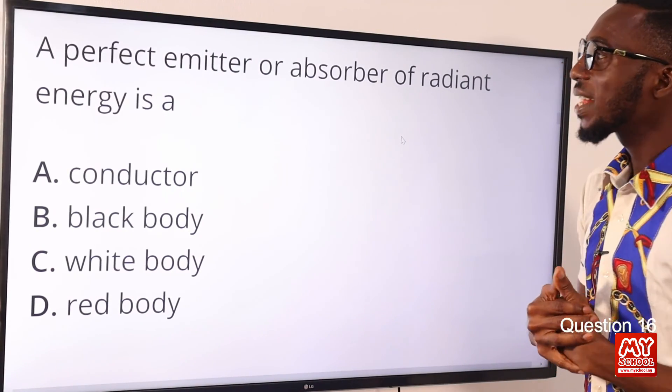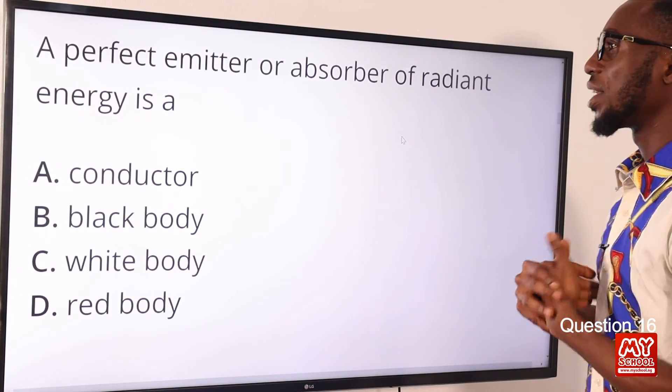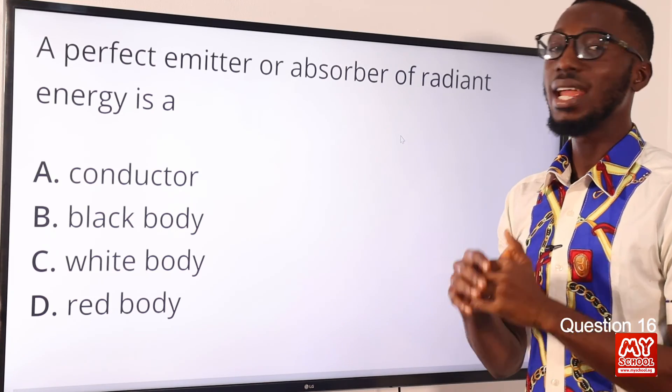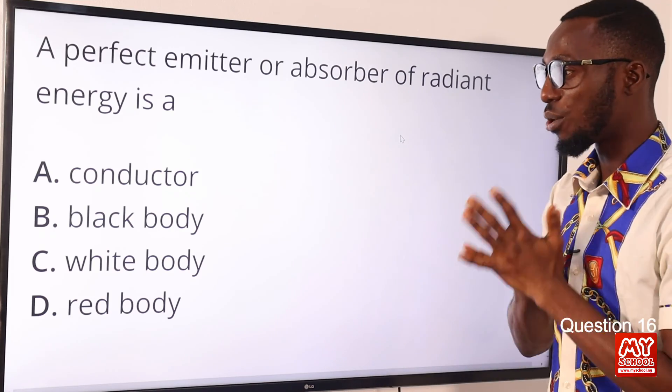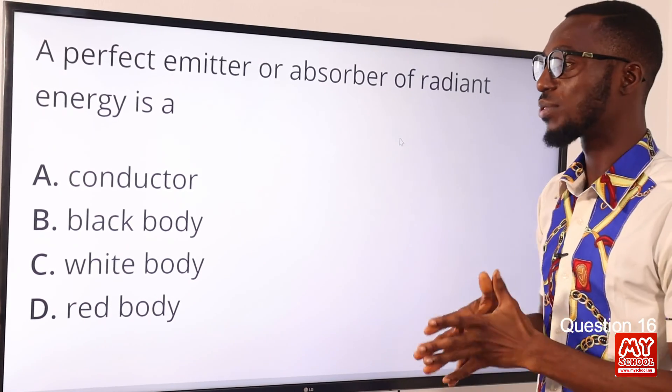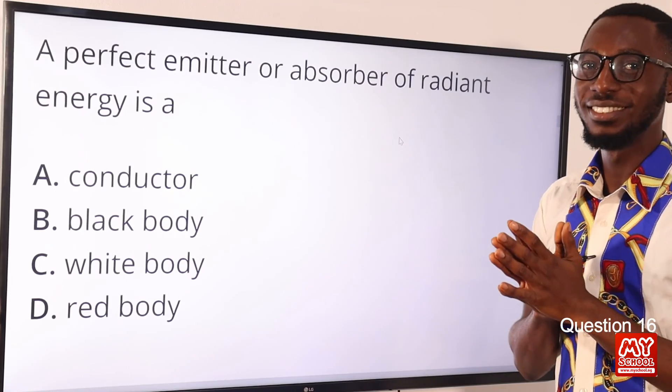Question 16. A perfect emitter or absorber of radiant energy is a dull black body or surface. So the correct option here is option B for black body. Right there we have come to the end of this video content, but there are more segments to come. All you need to do for yourself is to hit that like button. Also click on the subscribe button and always tap bell notifications so you can get informed immediately we put up the next video content just for your convenience.